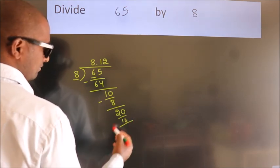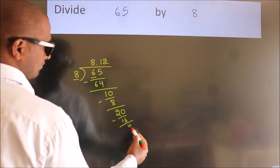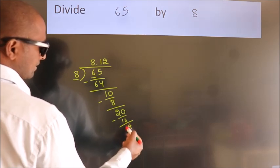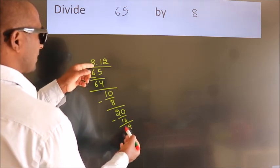Now we subtract. We get 4. After this, we already have the decimal.